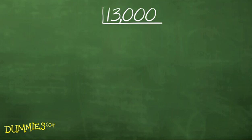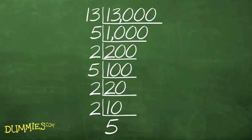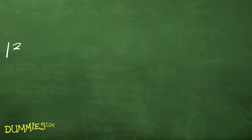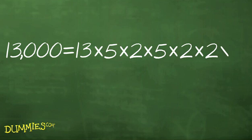In this case, start with thirteen because it seems obvious that it's a factor. The rest are all in a mixed-up order. The prime factorization of 13,000 comes out to 13×5×2×5×2×2×2×5, or 2³×5³×13.